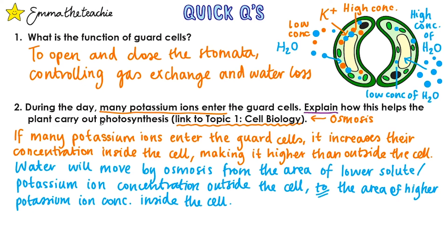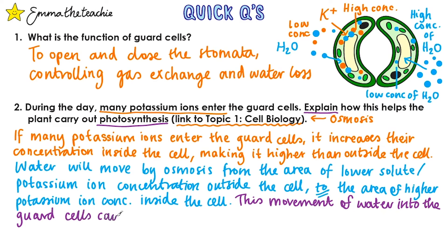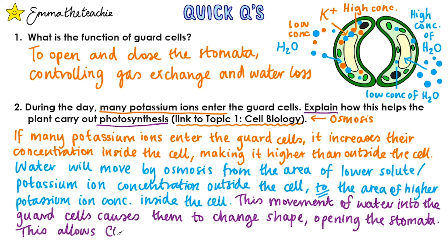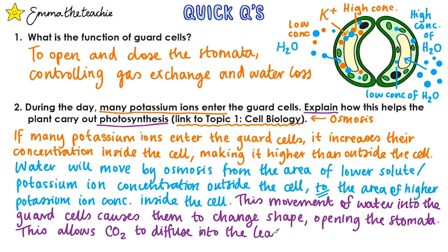This movement of water into the guard cells causes them to change shape, opening the stomata. This then allows carbon dioxide to diffuse into the leaf where it is used for photosynthesis. That was definitely a hard question, so a massive well done if you got that right.